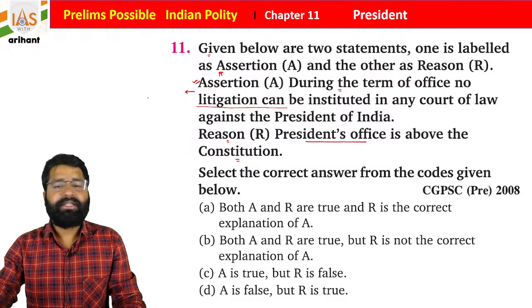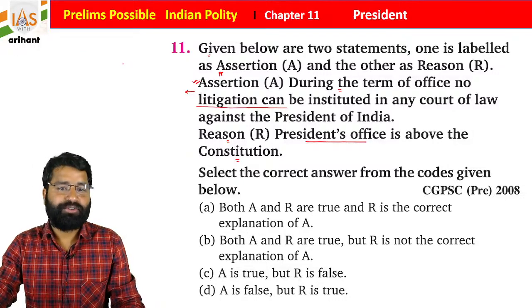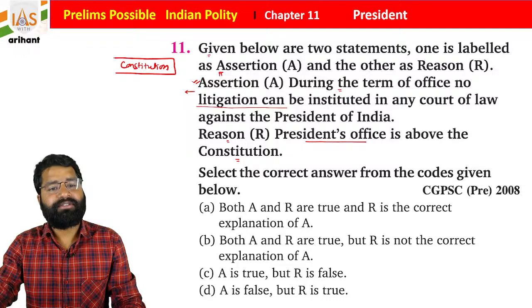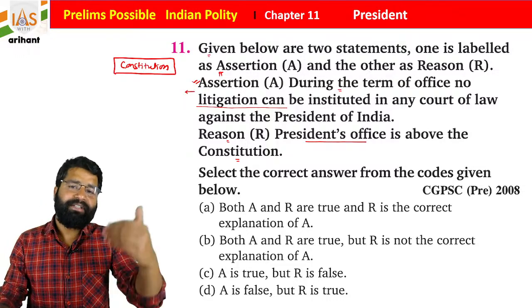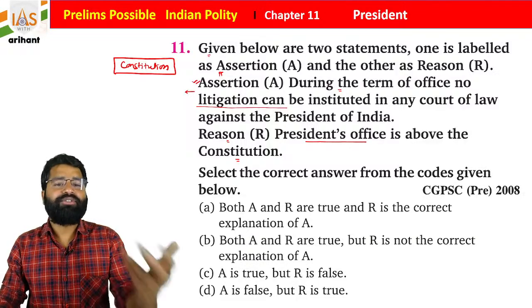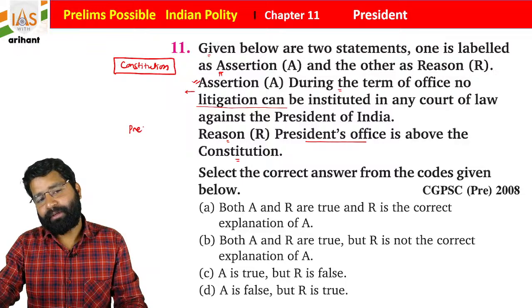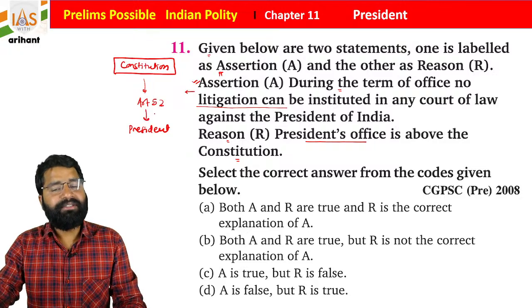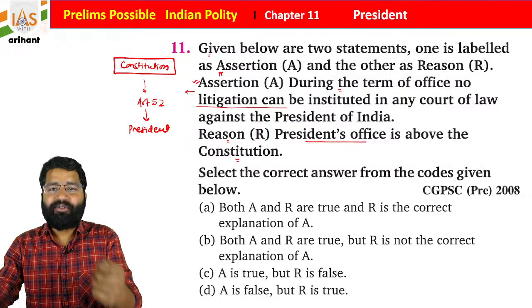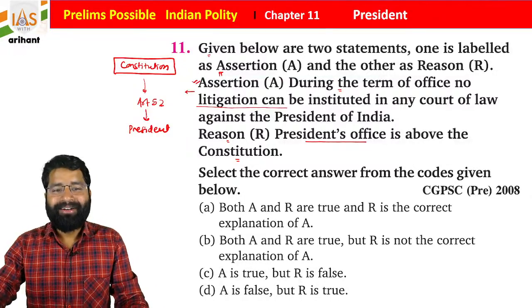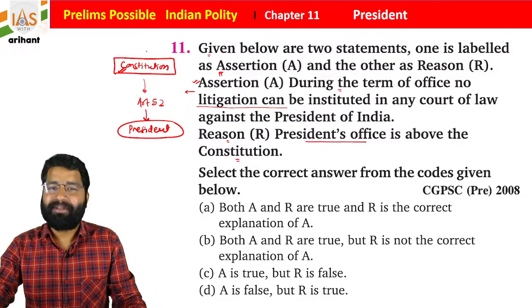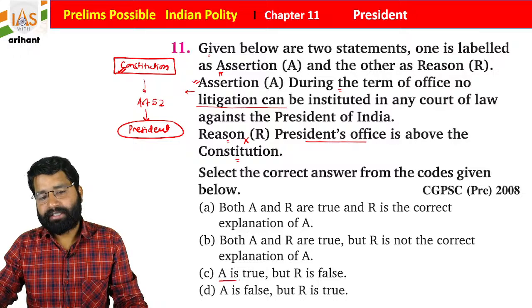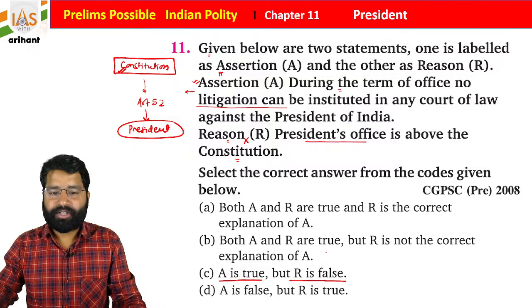In India, no one is above the Constitution — the Constitution is supreme. The President's post is mentioned under the Constitution in Article 52, and all powers and privileges of the President are included within the Constitution. So the President is not above the Constitution; rather, the Constitution is above the President. Therefore, the Reason is incorrect and the Assertion is correct — answer is Option C: Assertion is true but Reason is false.